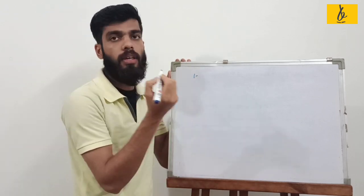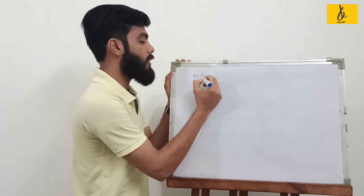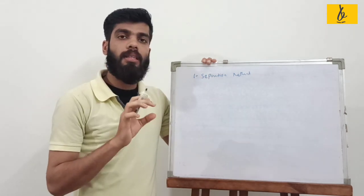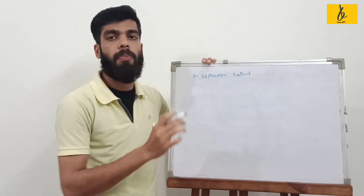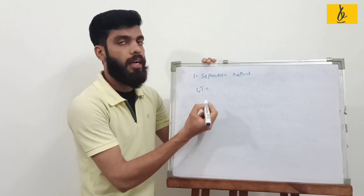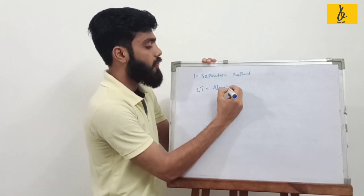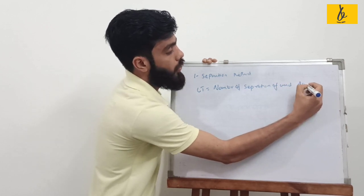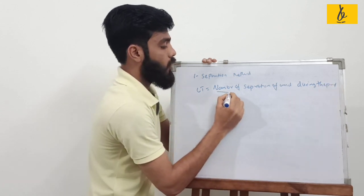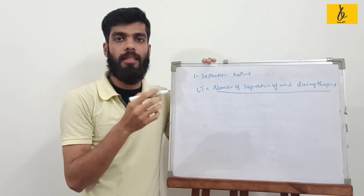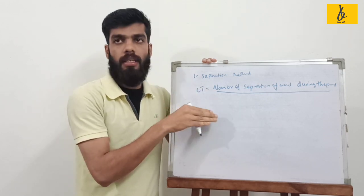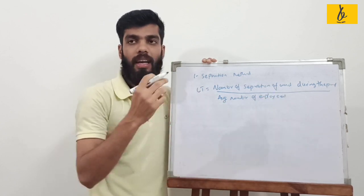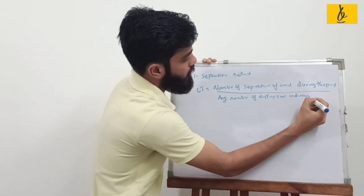The first method is the separation method. The number of separations of workers during the period is divided by the average number of employees during the period.